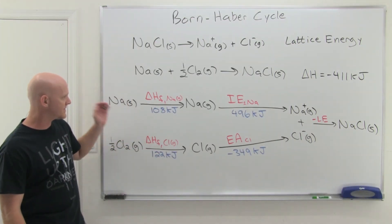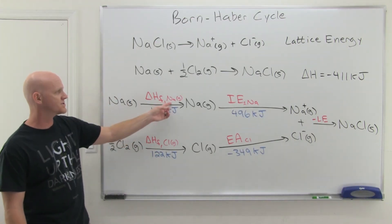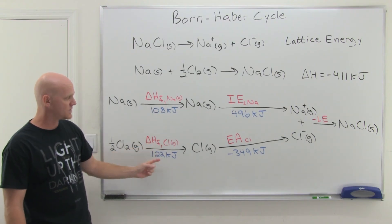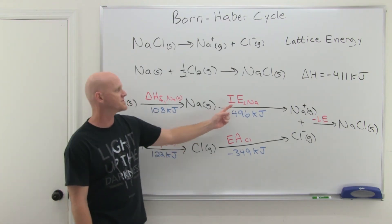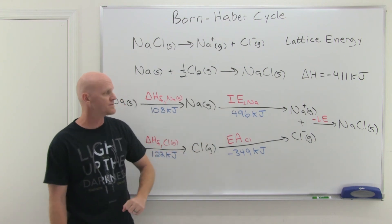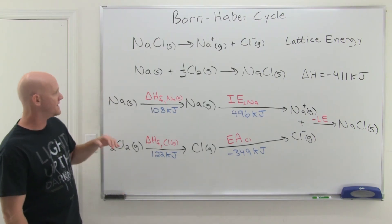So now I've got the individual values here. Here's the delta H of formation for sodium gas at 108 kilojoules, the delta H of formation of Cl gas at 122 kilojoules, the first ionization energy for sodium at 496 kilojoules, and the electron affinity of chlorine at negative 349 kilojoules.